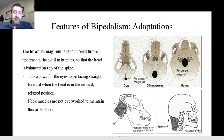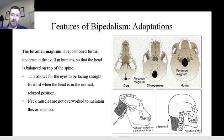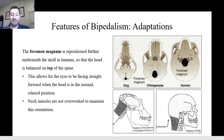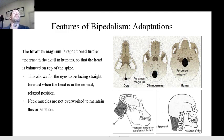Now we're going to look at the adaptations that are associated with bipedalism. The first one and one of the easiest to see is that the position of the foramen magnum is different in bipeds and quadrupeds — the more bipedal you are, the further it is under your skull. In humans the foramen magnum is all the way underneath the center of the skull, and you can think about that if you stand up with good posture: your head balances exactly on top of your spine.